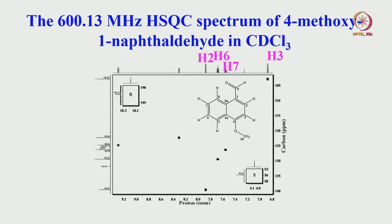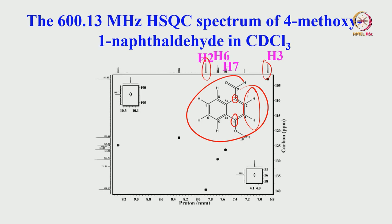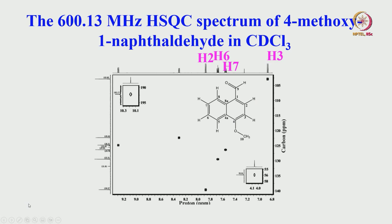A 600 MHz HSQC spectrum of 4-methoxynaphthaldehyde is shown. Looking at the phenyl region, there are two protons (H2 and H3) each appearing as doublets in the multiplicity pattern. The quaternary carbons give no peaks. Using prior knowledge of the proton spectrum and the proton/carbon chemical shifts from the HSQC cross peaks, protons H2 and H3 and other groups can be assigned. Additional examples will be discussed in the next class.